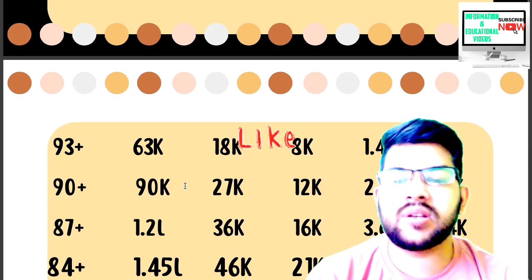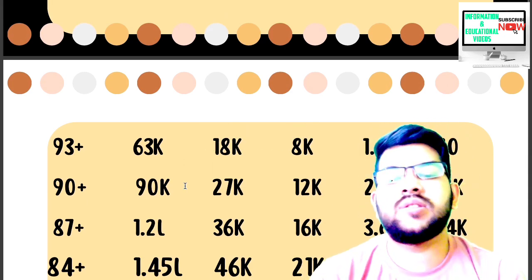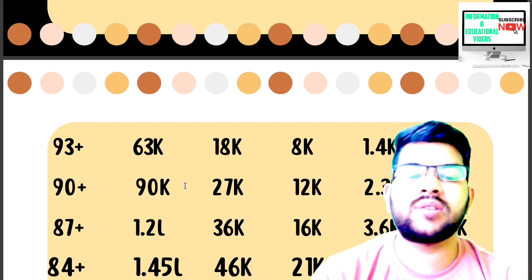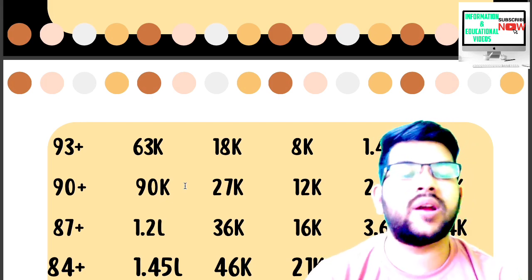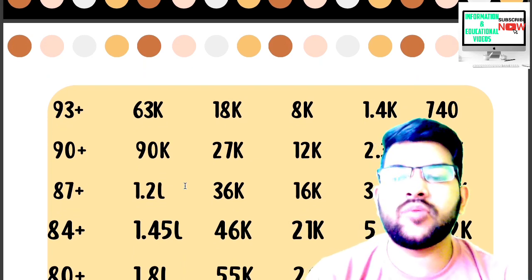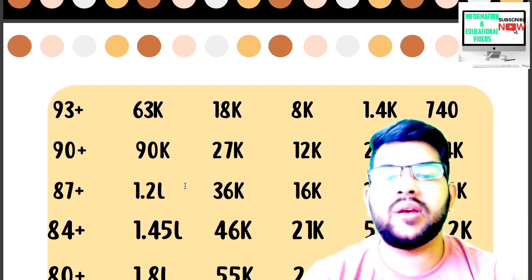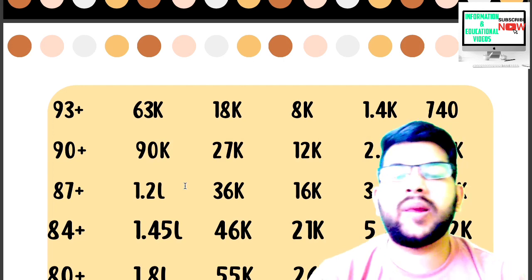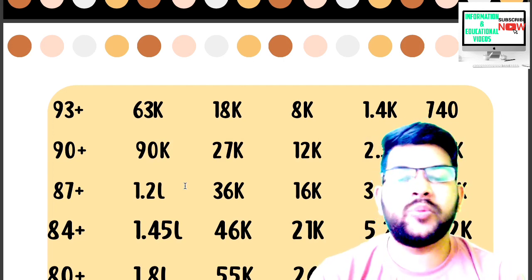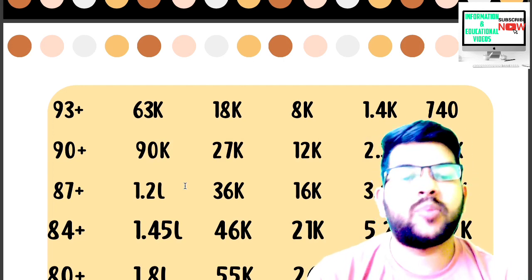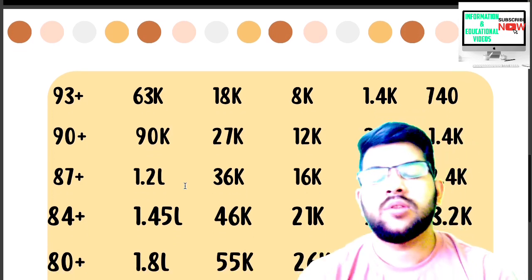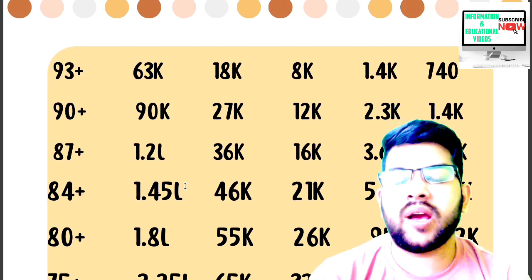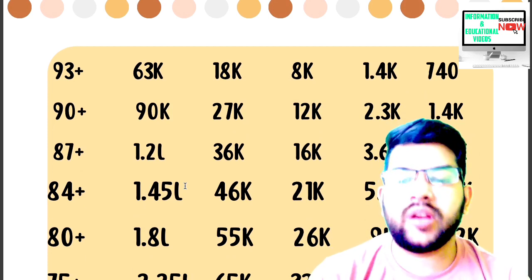For 87 plus percentile: CRL 1.2 lakh, OBC 36,000, EWS 16,000, SC 3,600, ST 2,400. For 84 plus percentile: CRL under 1.45 lakh, OBC 46,000, EWS 21,000, SC 5,200, ST under 3,200.